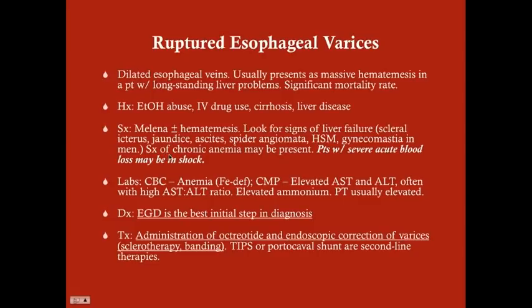Some symptoms of chronic anemia may be present. If the patient had severe acute blood loss, they may be in shock: low blood pressure, increased heart rate. Always tend to the ABCs first. On labs from the CBC, there's typically anemia — due to blood loss or anemia of chronic disease from long-standing cirrhosis and inflammation. The CMP is pretty much always going to show elevated AST and ALT, often with a high AST-to-ALT ratio — usually about 2.5 to 1 — which signifies alcoholic liver disease.